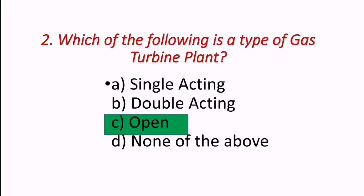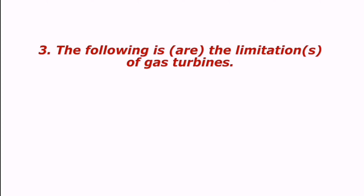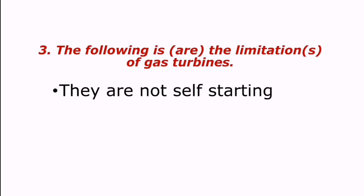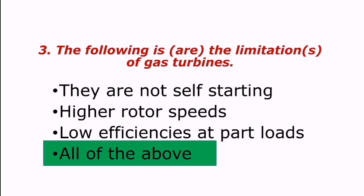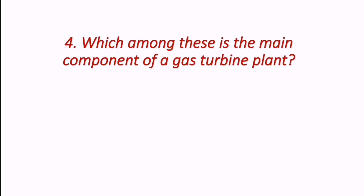Question: Which of the following are limitations of gas turbines? The answer is all of the above. The limitations are: they are not self-starting, they have higher rotor speeds, and they have low efficiencies at part loads.